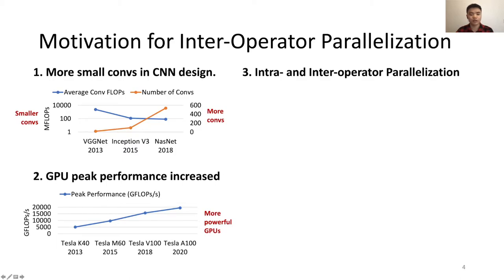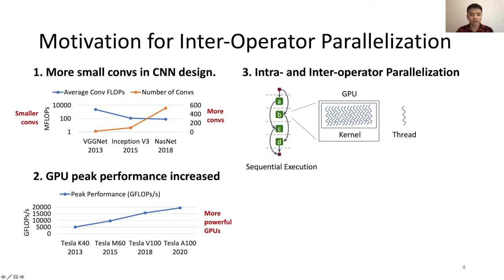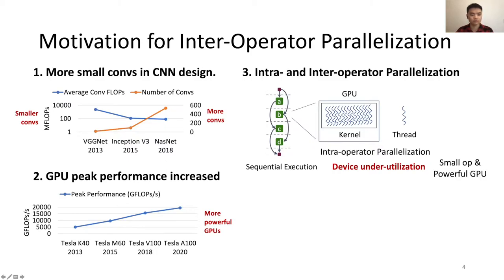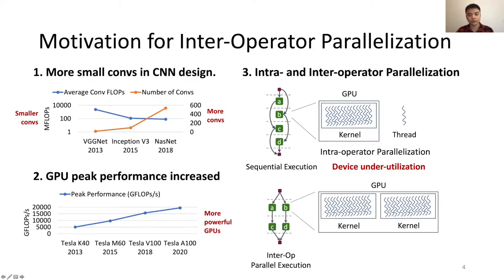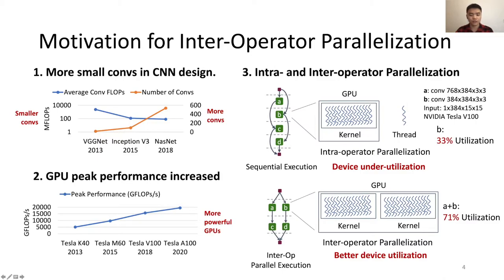Let's have a look at intra and interoperator parallelization. Sequential execution is widely adopted by deep learning frameworks, which execute operators one by one, with computation parallelized through threads in a GPU kernel — we call this intraoperator parallelization. It can suffer from underutilization problems, especially when executing a small operator on a powerful GPU. On the other hand, we can do computation of multiple operators simultaneously — interoperator parallelization — which usually has better device utilization. For example, the utilization of operator B alone is 33%, while concurrent execution of operators A and B achieves 71%.